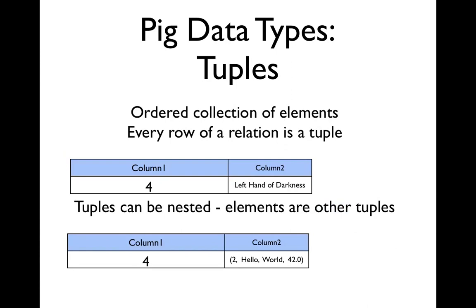The next data type is tuples. A tuple in Pig means what it means anywhere else, just an ordered set of values. They can be integers, they can be strings, they can also be nested. You can have the second element of a tuple be another tuple. You might have noticed the rows in a relation are basically tuples, and really that is how they're implemented under the hood.